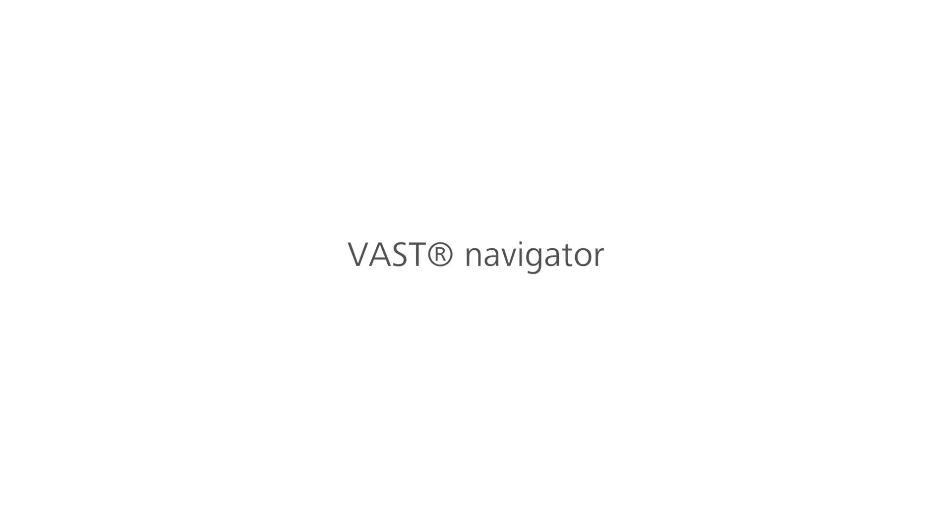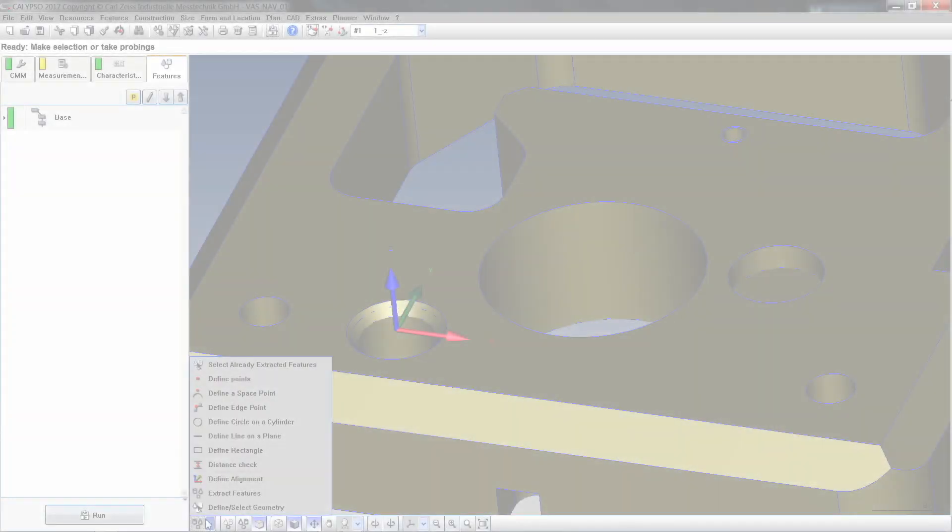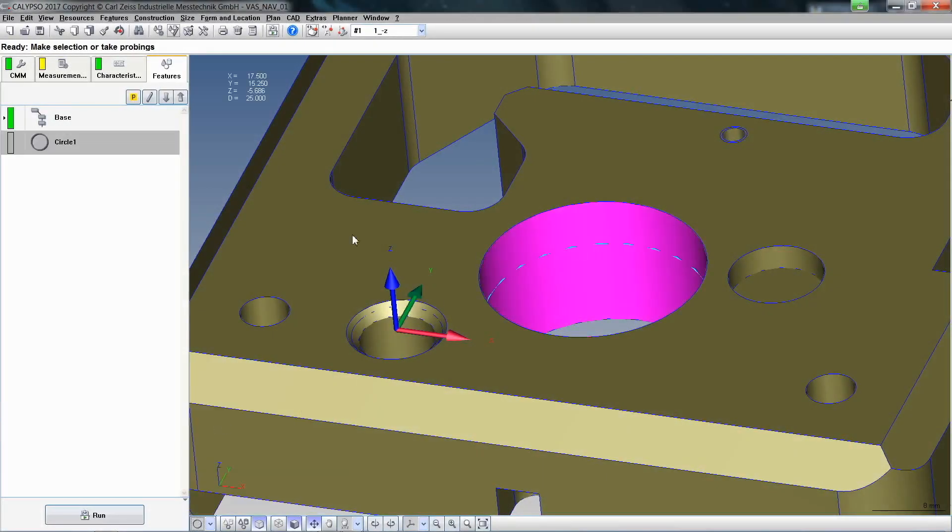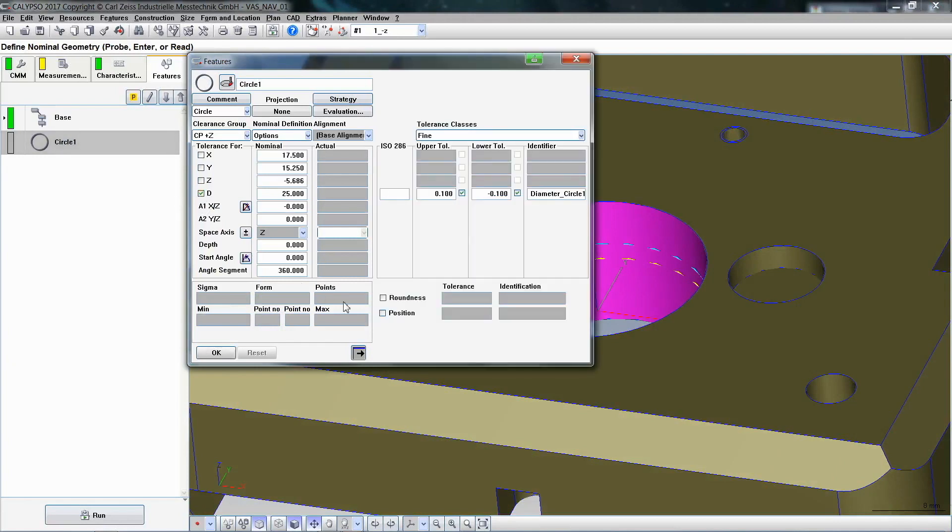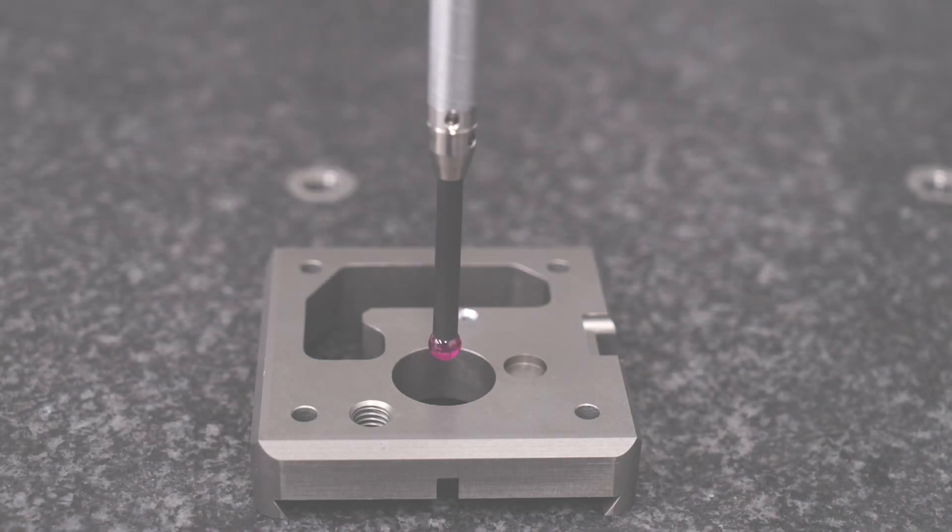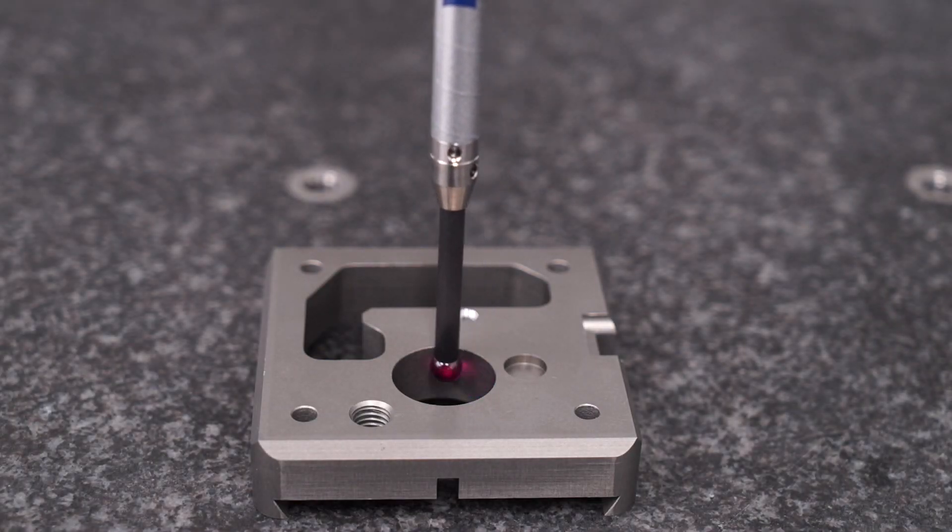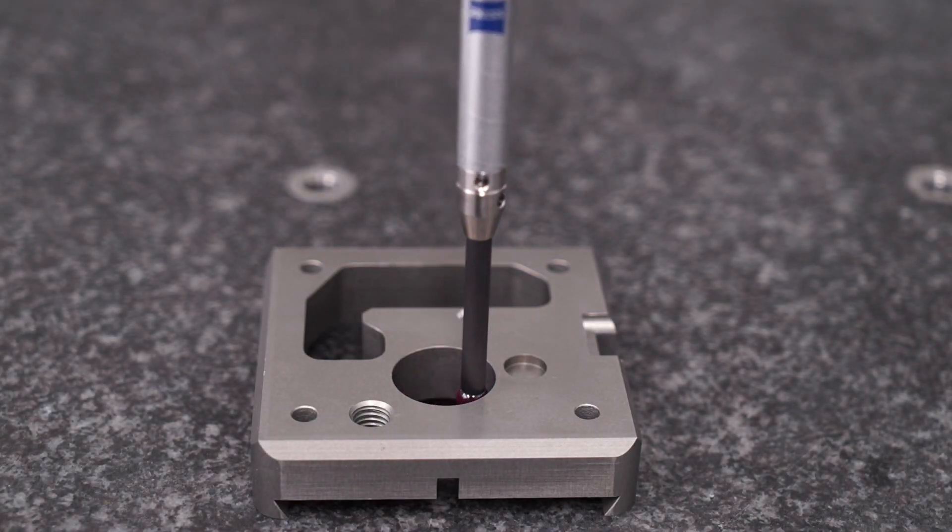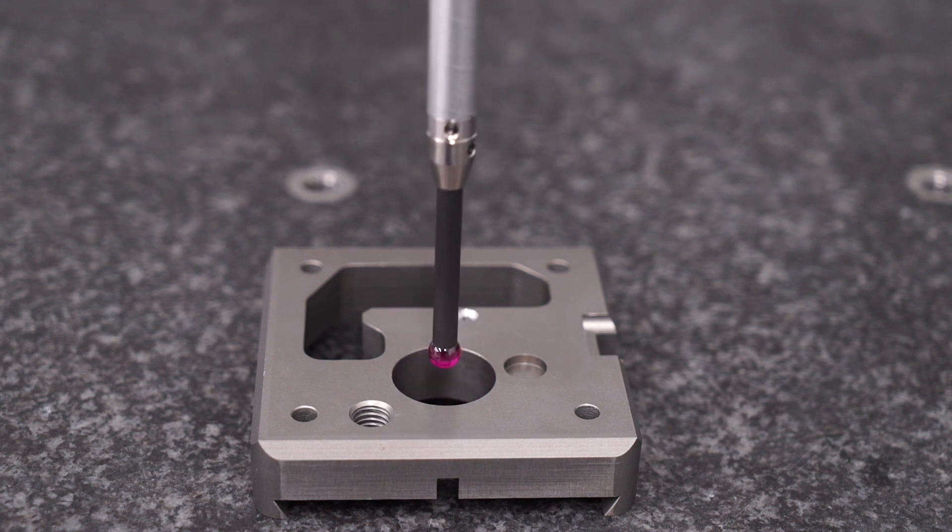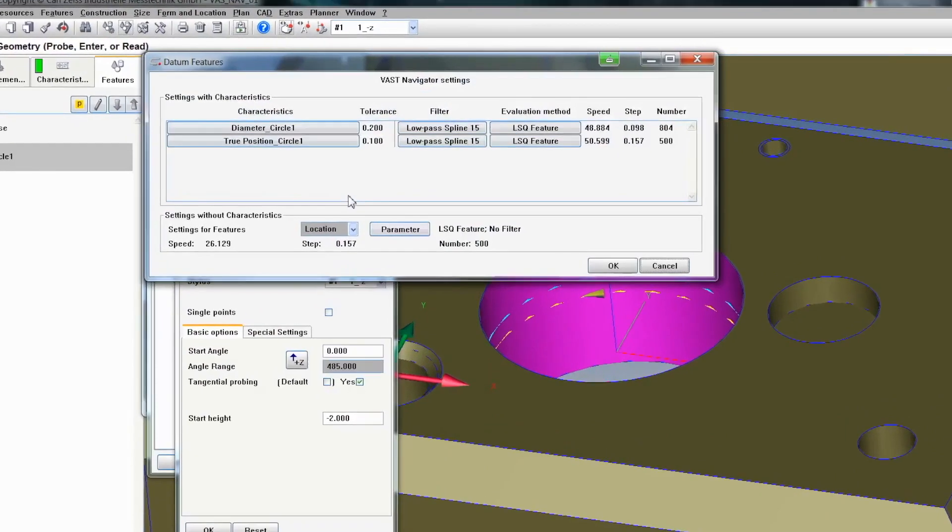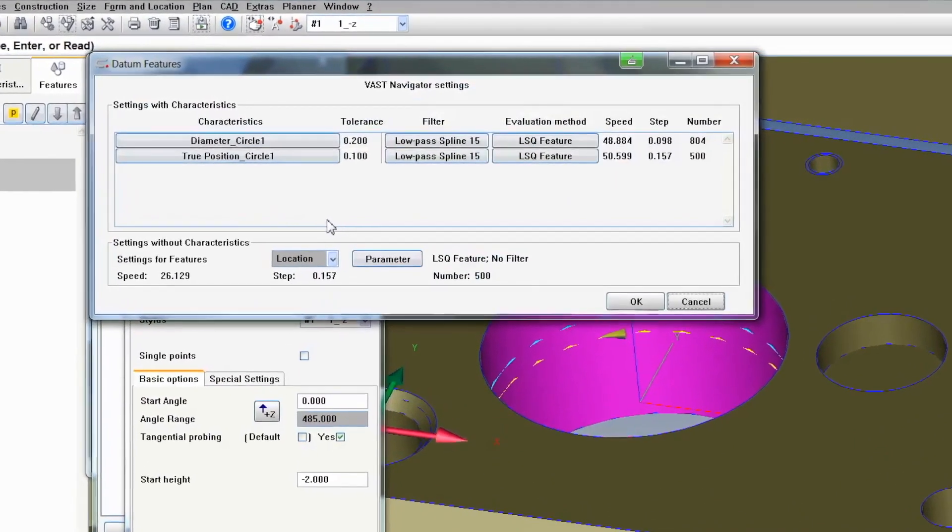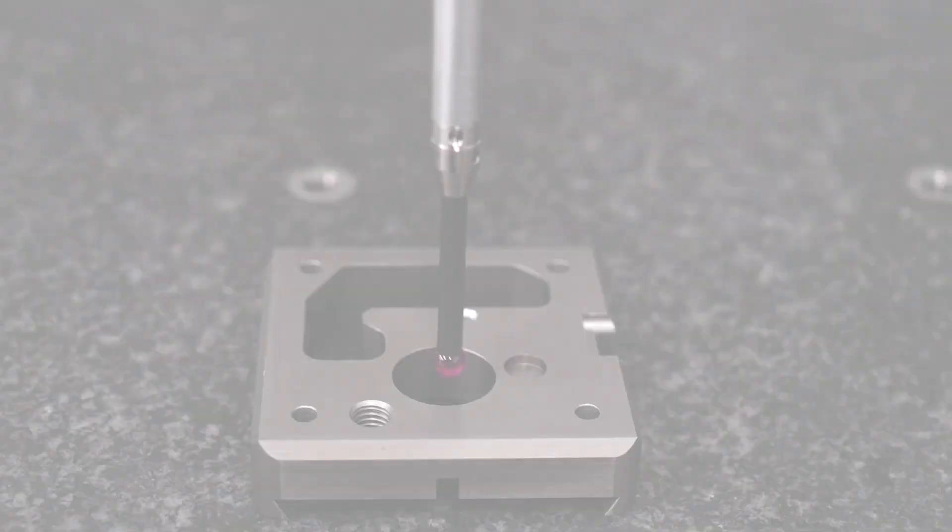What is the VAST navigator? The VAST navigator automatically calculates the optimum scanning speed in accordance with accuracy specifications and ensures that this speed is maintained. While a scanning speed of 10 millimeters per second was used in the past to evaluate a diameter, VAST navigator enables speeds of 48 millimeters per second. This reduces the measuring time enormously.